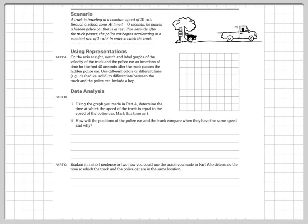Today we're looking at one of the classic physics kinematics problems, usually called cops and robbers. The general premise is the same: we have a bad guy — a lawbreaker, a ne'er-do-well — who is speeding by, and it takes a moment for law enforcement to start chasing. The bad guy is traveling at a constant speed, the good guy starts with a velocity of zero but with an acceleration. Our objective is to determine when and where the cop catches up to the robber, or in this case, the truck speeding through a school zone.